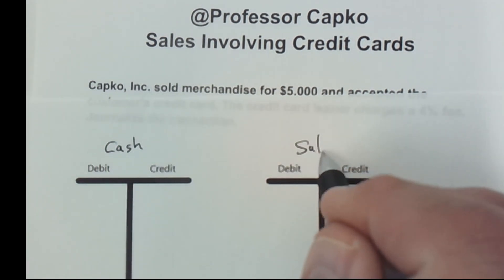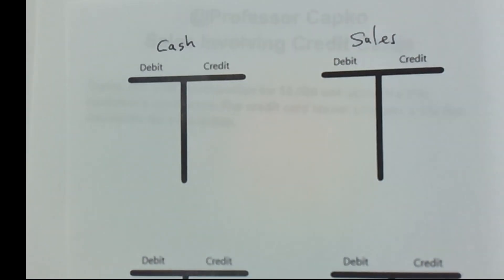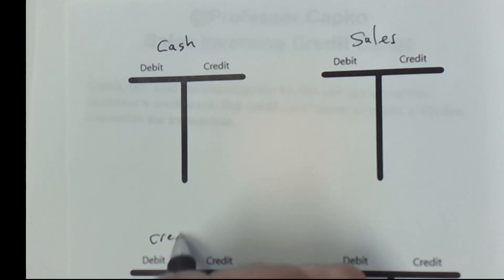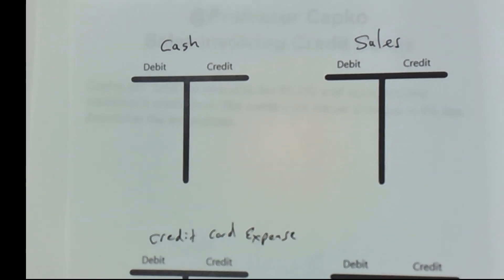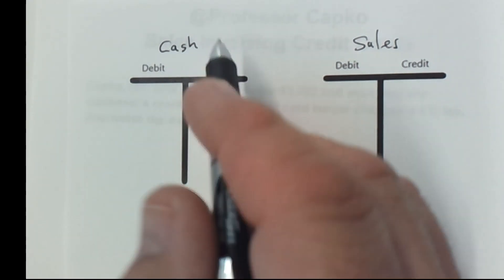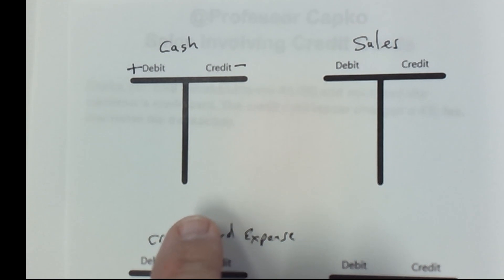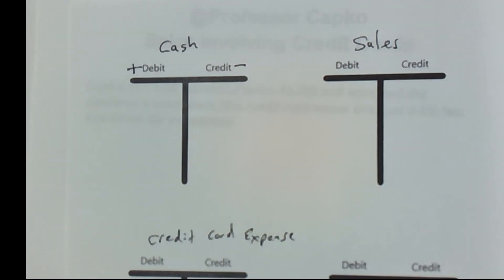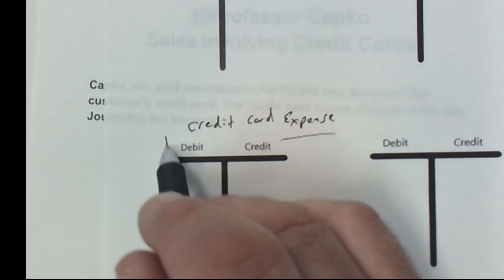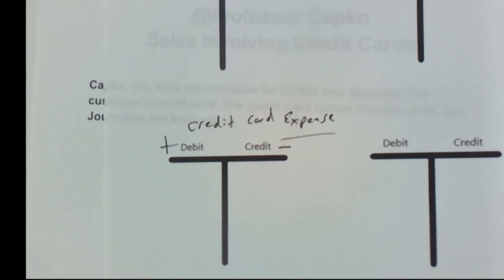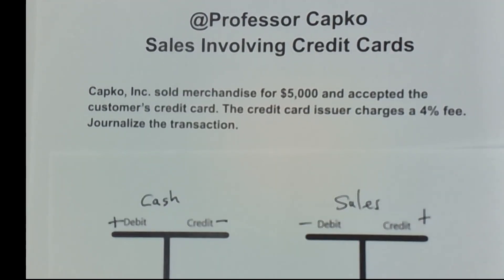We're going to deal with the sales account, and we're going to use another account called credit card expense. As a reminder of the different types of accounts: the cash account is an asset account, and asset accounts go up with debits and down with credits. Sales is a revenue account, and therefore it goes up with credits and goes down with debits. Credit card expense, since it's an expense account, goes up with debits and down with credits.